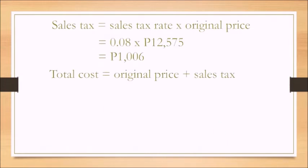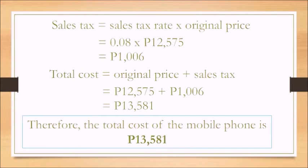Total cost is the original price plus the sales tax. So $12,575 plus the sales tax which is $1,006, we have $13,581. Therefore, the total cost of the mobile phone is $13,581.